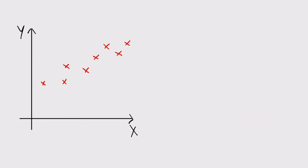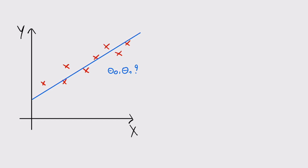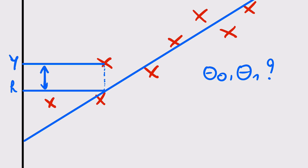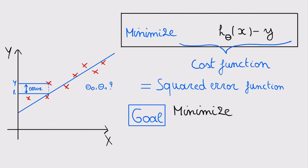So how can we choose values for theta 0 and theta 1 to get the best fitting line through our dataset? The idea is to choose parameter values so that our hypothesis is close to the real values of the training examples. In many cases there is still an error between the predicted value and the real value, so the goal is to minimize that error, which will guide us to good values for theta 0 and theta 1.